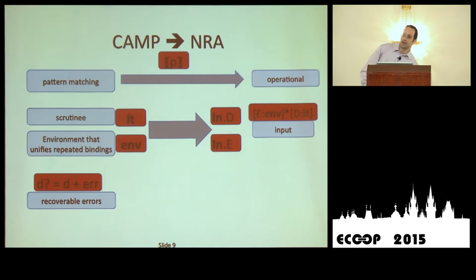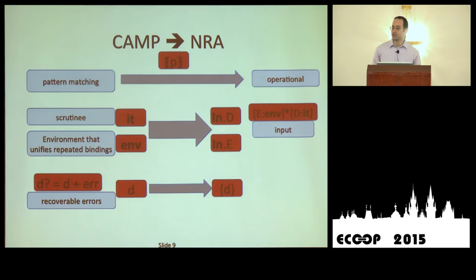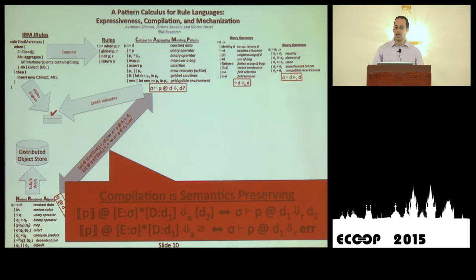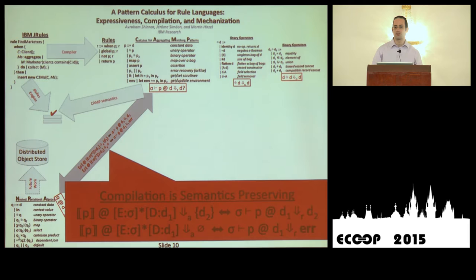We have a proof that this compiler is semantics-preserving in both directions: correct programs compile to correct programs, and we don't produce correct programs out of thin air — we only produce programs that execute to a value if the original did. The gray arrow in our diagram indicates that this has been mechanized in Coq, an interactive theorem-proving assistant, available as an accompanying artifact for the paper.